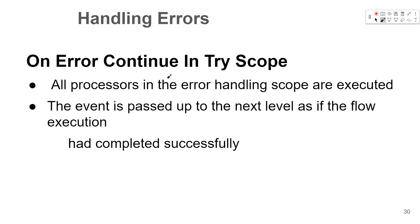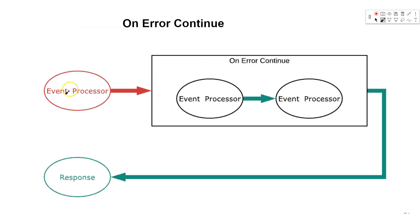If we use On Error Propagate instead, it will send an error and not continue to the next element of the payload — it will stop and return an error. With On Error Continue, as shown in the diagram, an error comes in, gets resolved inside the scope, and at the end it sends a success response.